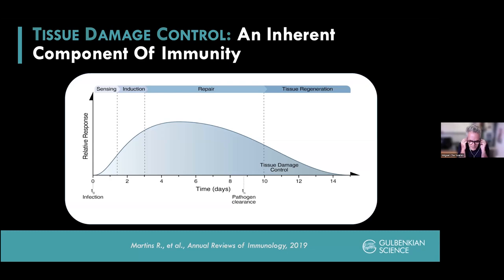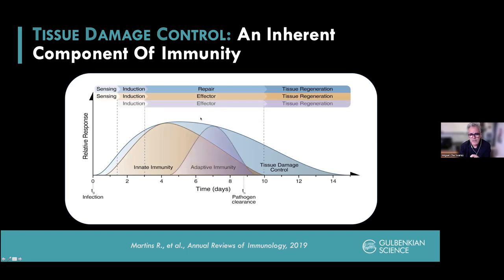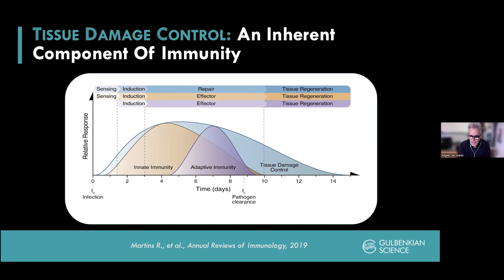Evolutionarily, perhaps the first thing that emerged was tissue damage control mechanisms. In a hypothetical infection from time 0 to time 14, there are three phases: sensing, induction, repair and tissue regeneration. Tissue damage control mechanisms must be operational so that innate and adaptive immunity can be imposed while restraining the associated dysfunction and damage. You need to set up a protective mechanism for vital organs so that the immune system can operate without compromising the survival of the infected host. We put this forward in Nature Reviews in 2019.